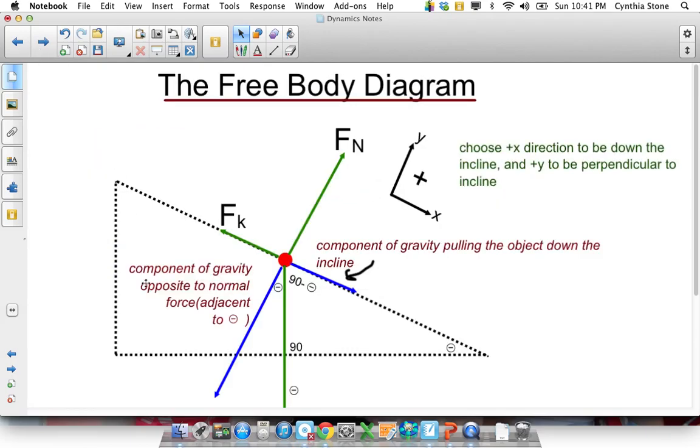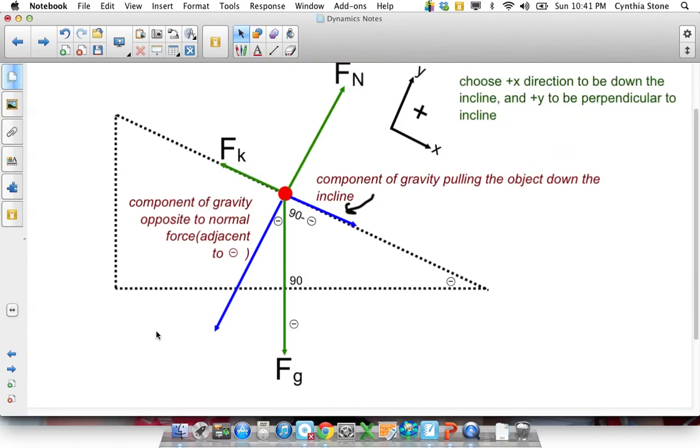Looking at a free body diagram, what you've got here is the green are the actual forces and blue represents components of forces that actually do the pulling.